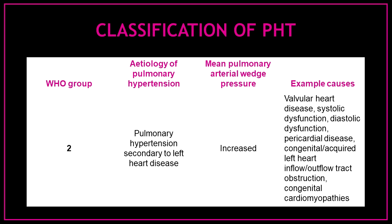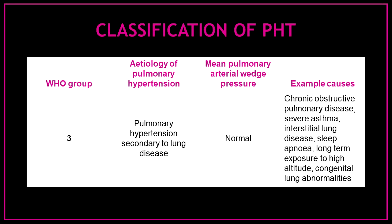The second group are those patients with pulmonary hypertension secondary to left heart disease. These patients have increased mean pulmonary arterial wedge pressure. The third group are those patients with pulmonary hypertension secondary to lung disease, with a normal mean pulmonary arterial wedge pressure.